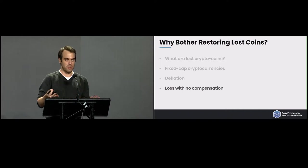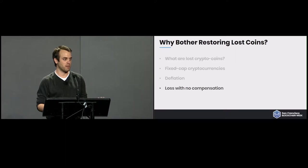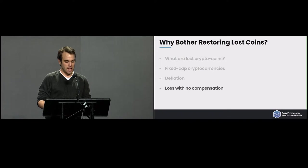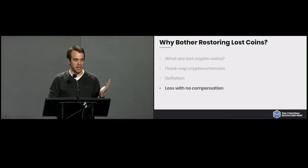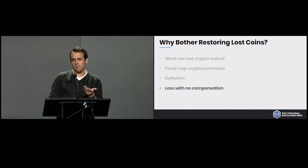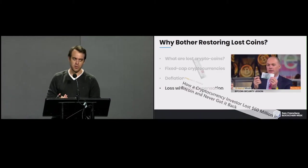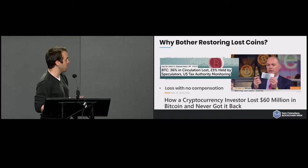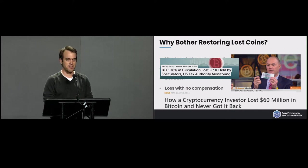For example, the Bitcoin protocol dictates that eventually we'll converge on 21 million Bitcoins in circulation, but we're never going to see 21 million in circulation as things stand. We might say, well, how much of a problem is that? We should be able to trust users to manage their coins — except that notoriously, users aren't very good at managing their secret keys.